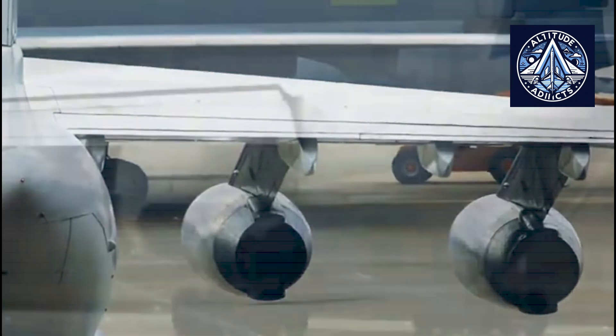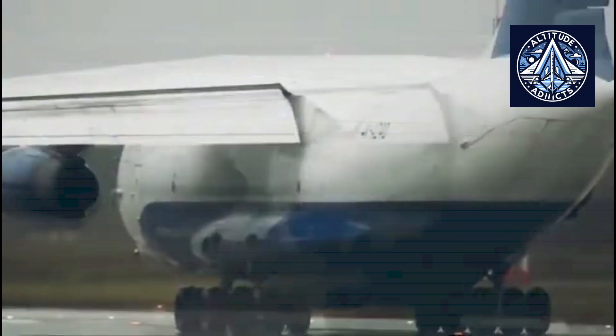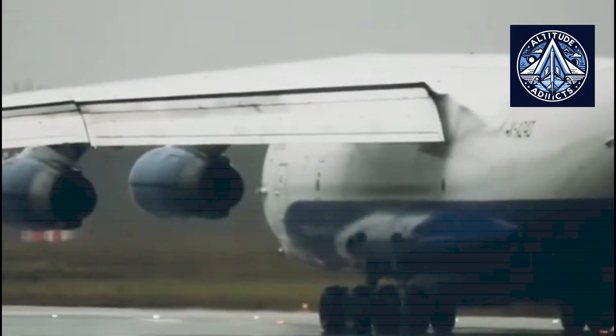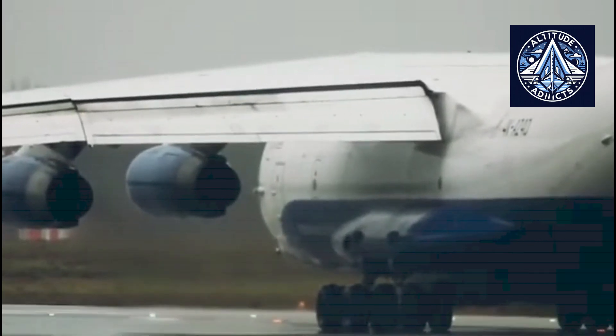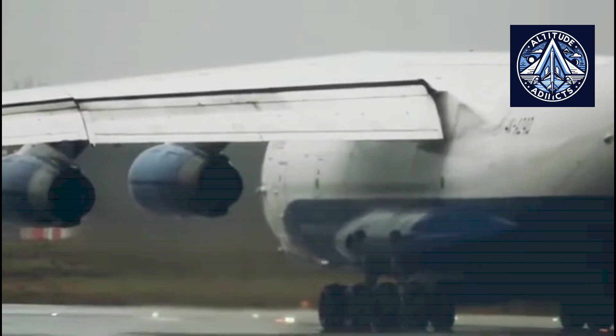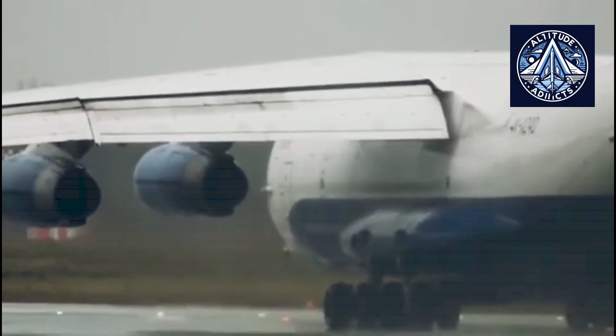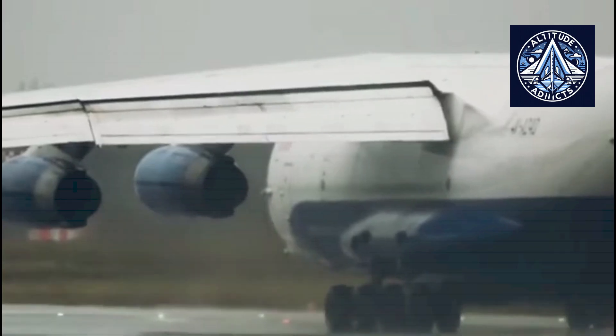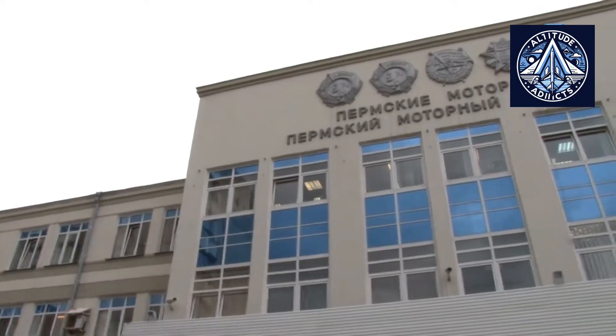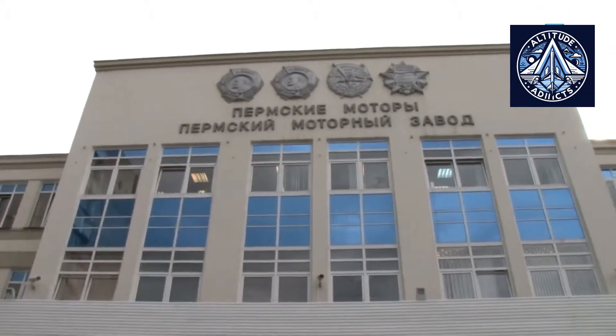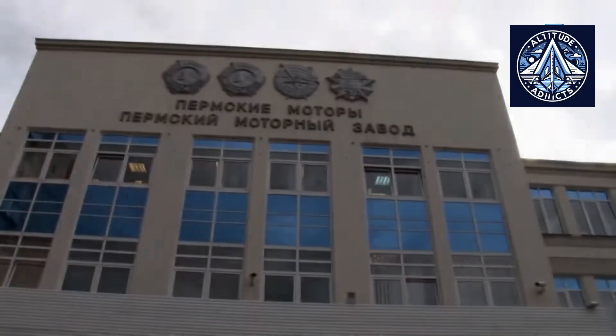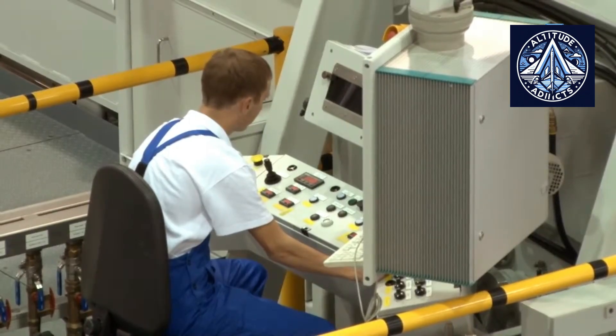A landmark of this generation was the D-20P engine, created under Pavel Soloviev in Perm. It became the Soviet Union's first domestically built turbofan for passenger aircraft. Another important example was the D-30KP engine from UEC Saturn in Rybinsk, featuring a bypass ratio of more than 2. The D-30 family powered many key Soviet aircraft and remained operational for decades.